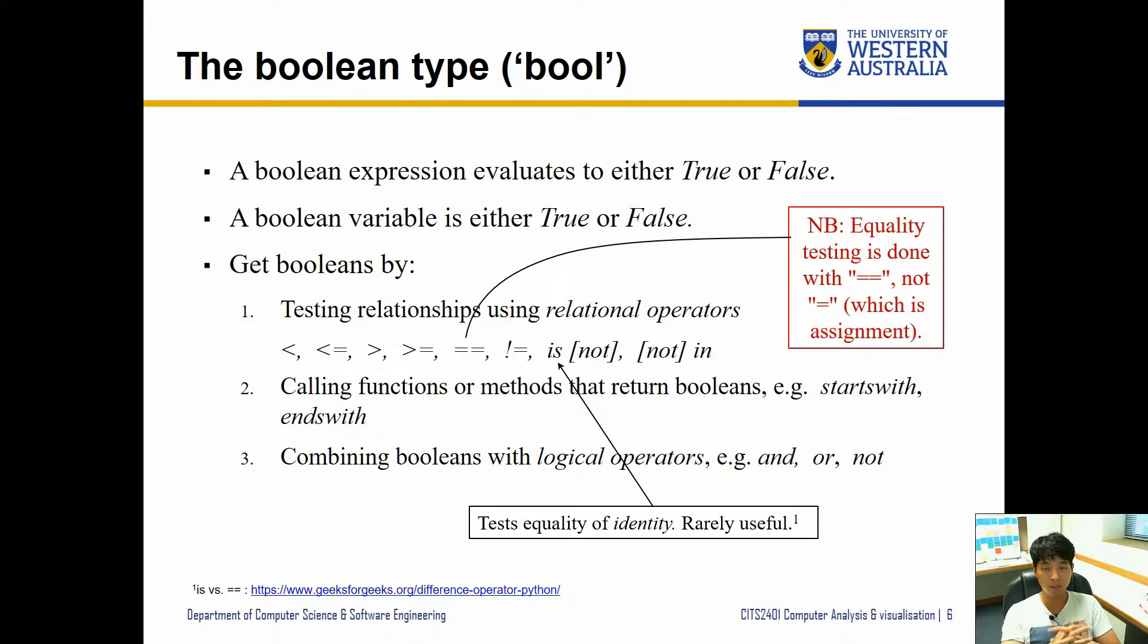The 'is' operator does something similar to the double equal sign, but you have to be careful because this tests the equality of identity, not necessarily the value. I will suggest you go and see the link about the difference, but for this particular unit we will probably not use 'is' much at all.